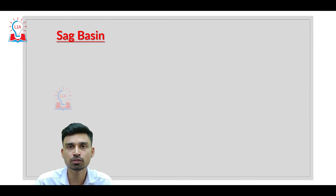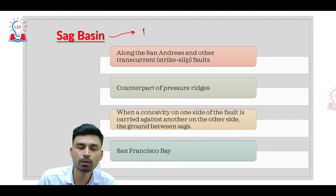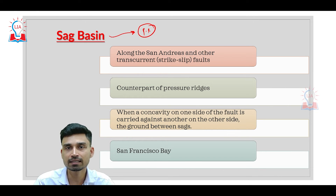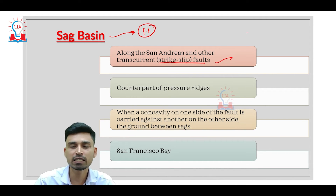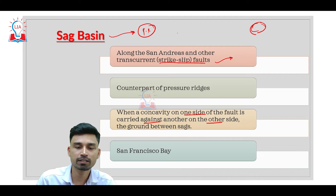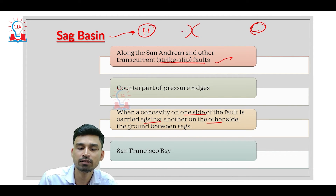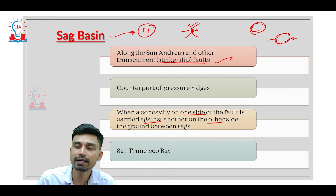The next major landform associated with tectonic plate disturbance is the sag basin. A sag basin is quite opposite to pressure ridges. A pressure ridge develops when two convex-shaped landforms push against each other. At the same time, when there is a strike-slip fault at a place of transform plate interaction, and two concave areas come in contact with each other, what happens is that when a concavity on one side of the fault is carried against another on the other side, the ground between them will sag. If we have two concave-shaped landforms coming toward each other, a depression develops in between — that is referred to as a sag basin.